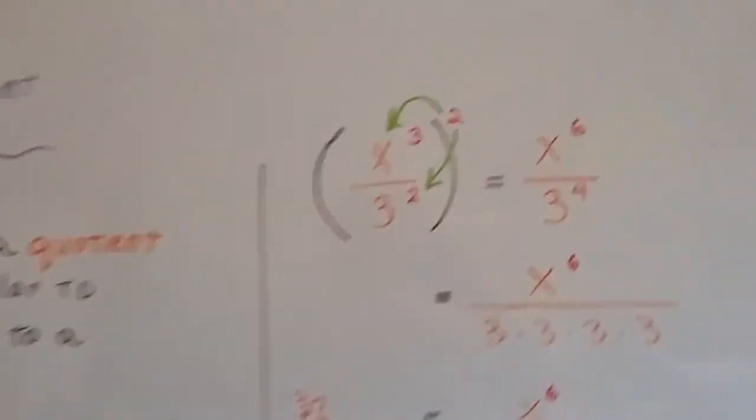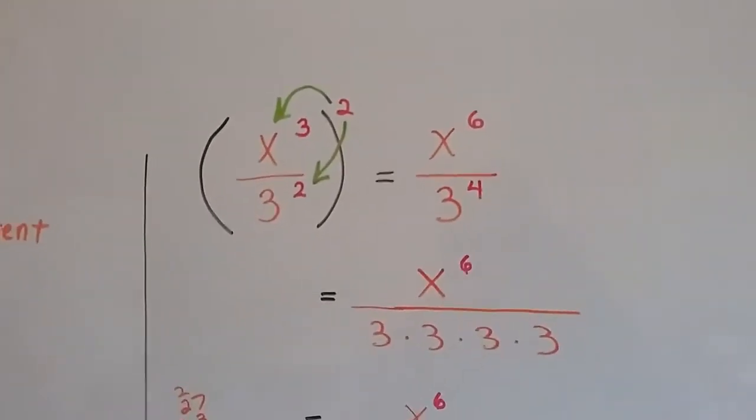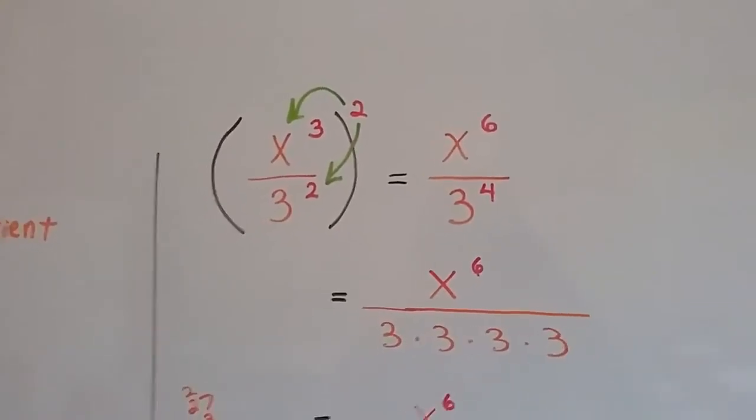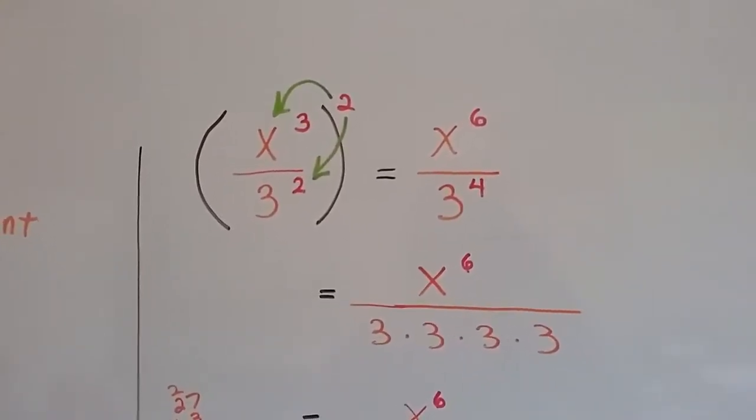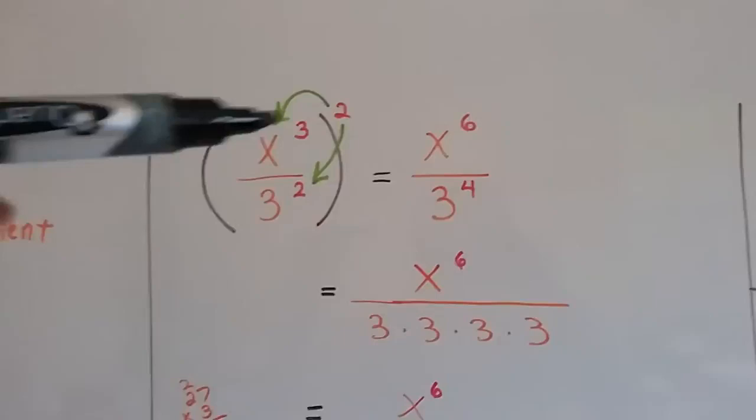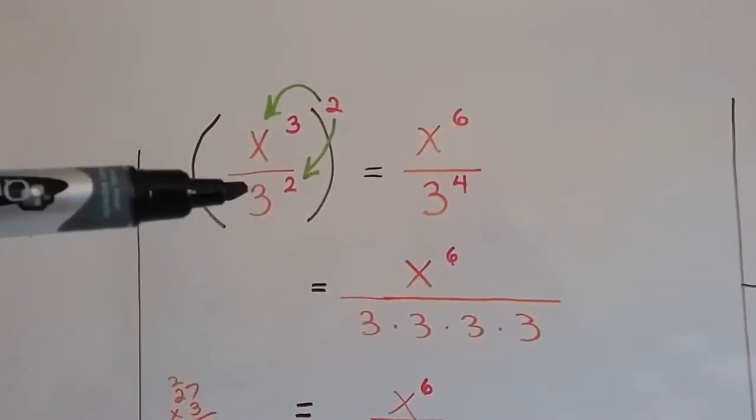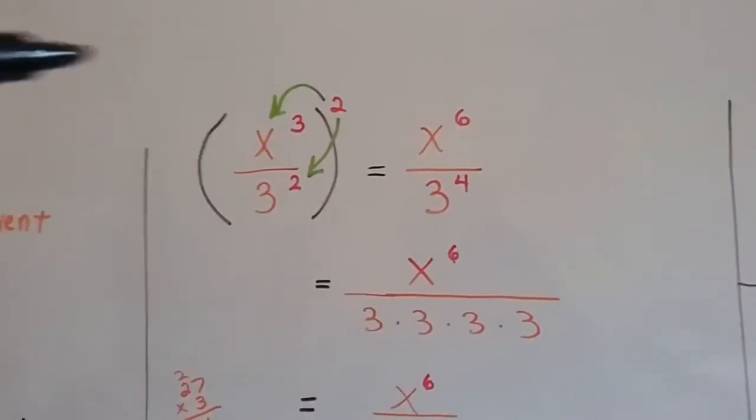So let's take a look at this one. It's just like distributing it, but now we're going to distribute it to the numerator and to the denominator. So we've got x to the third power over 3 to the second power and they're raised to the second power.